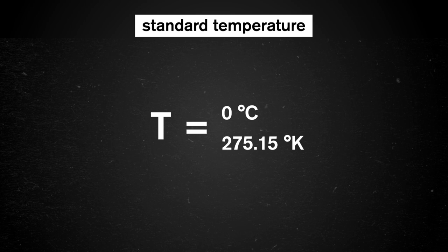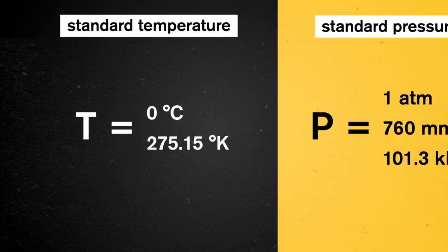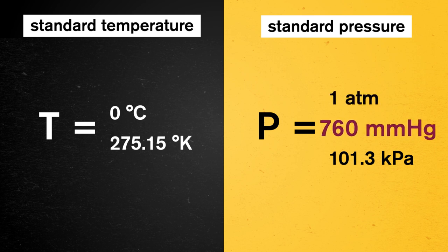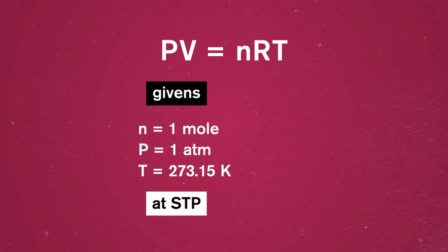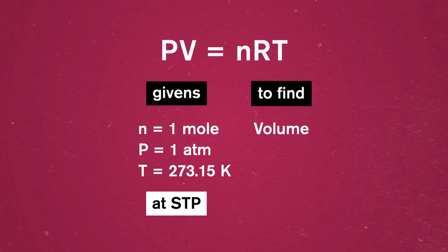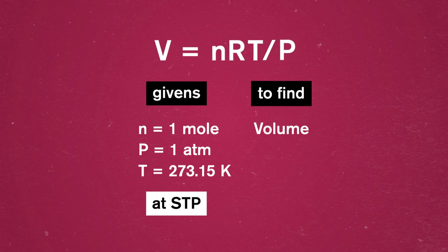At standard temperature, T equals zero degrees Celsius, or 273.15 kelvin. At standard pressure, P equals one atmosphere, 760 millimeters of mercury, or 101.3 kilopascals. Most of the time this information is given to us, or we can look it up. At standard temperature and pressure, we can plug both of these constants in for T and P in our equation and solve for the volume of one mole of any gas. The reason this is important is because we can use the answer as a conversion factor in all kinds of future reactions. Let's start by rearranging the ideal gas law equation so that we're solving for volume, and we'll use an R with liters in it to get an answer in liters.